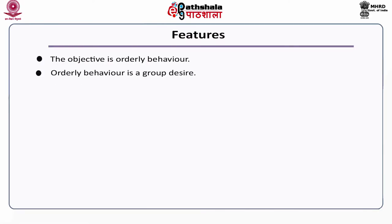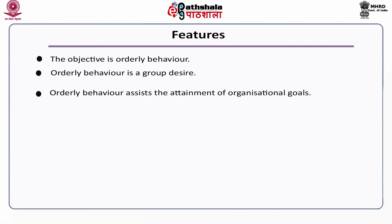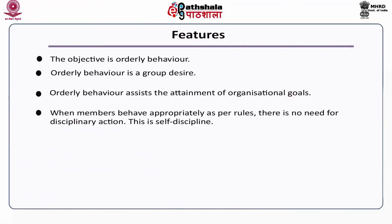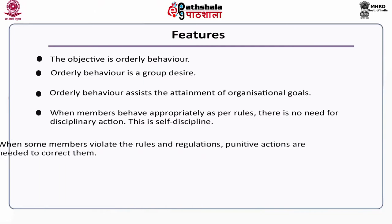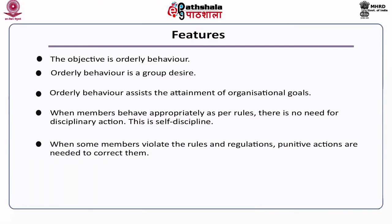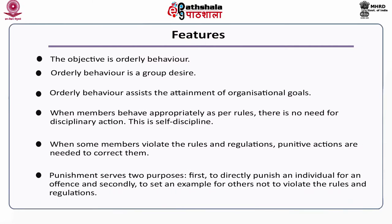The objective of discipline is orderly behavior, which is a group desire. Orderly behavior assists the attainment of organizational goals. When members behave appropriately as per rules, there is no need for disciplinary action — this is self-discipline. When some members violate rules and regulations, punitive actions are needed to correct them. Punishment serves two purposes: first, to directly punish an individual for an offense, and secondly, to set an example for others not to violate the rules and regulations.